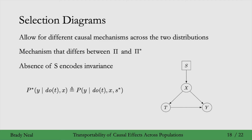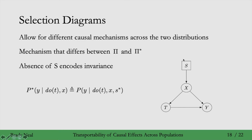The way we write p* is by conditioning on the selection node s*. So p*(y | do(t), x) is the same as p(y | do(t), x, s*), where we've removed the star from p and instead condition on s = s* to denote which distribution we're in.